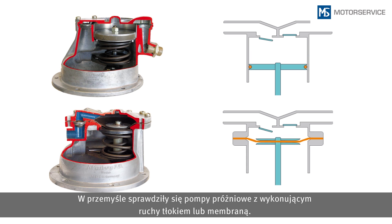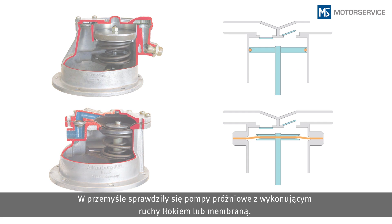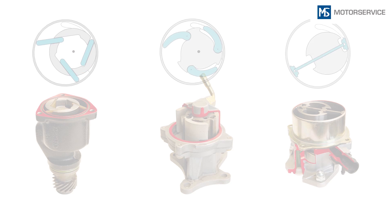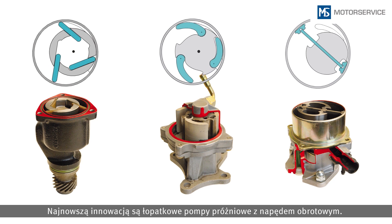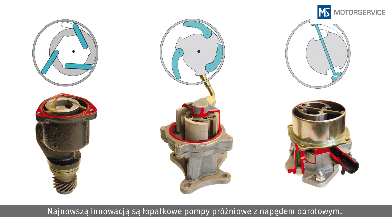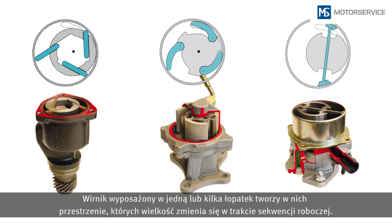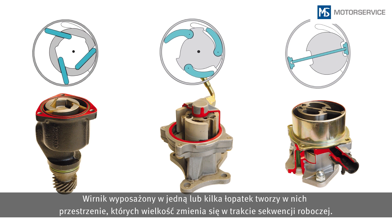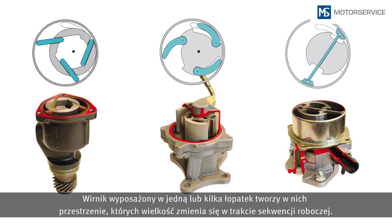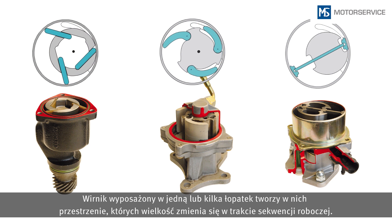Vacuum pumps that move a piston or diaphragm back and forth have long proven their worth in the field. A more recent development is vane vacuum pumps with rotary drive. Here, a rotor with one or more vanes forms compartments, the size of which varies during the work cycle.